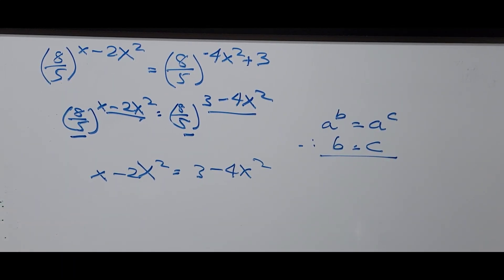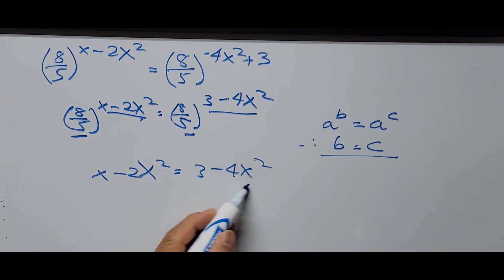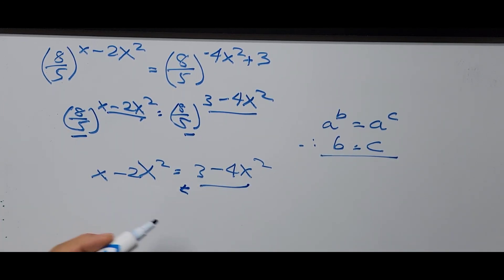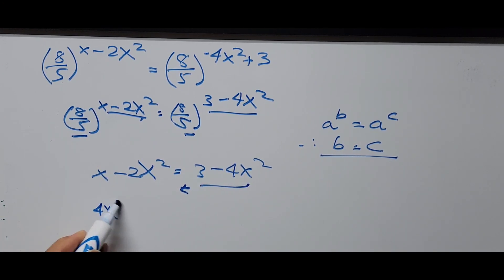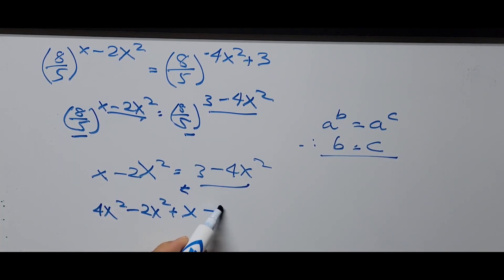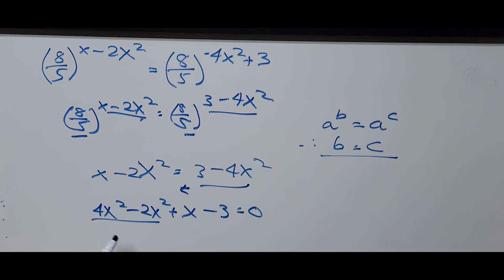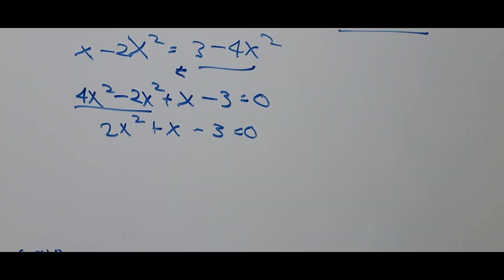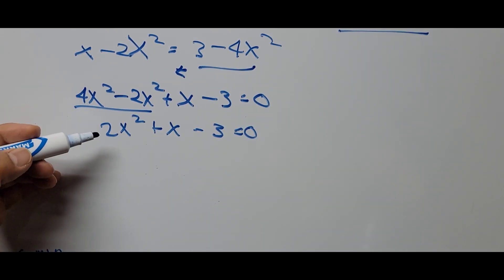Simplifying the equation by moving all terms to the left side: we add 4x squared to both sides, giving positive 4x squared minus 2x squared, plus x, and 3 becomes negative 3, equals 0. Combining like terms: 4 minus 2 is 2, so we get 2x squared plus x minus 3 equals 0. The equation is now in quadratic form.